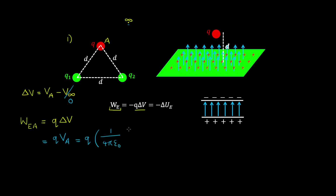We multiply by Q1 over the distance from Q1 to the test charge Q, then add the contribution of charge 2 to the electric potential: 1 over 4π epsilon-zero multiplied by Q2 over the distance from Q2 to point A.